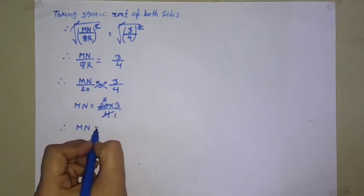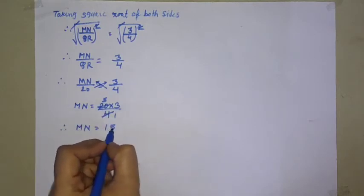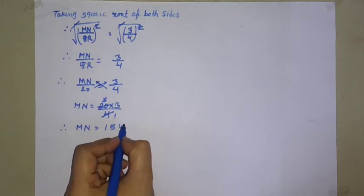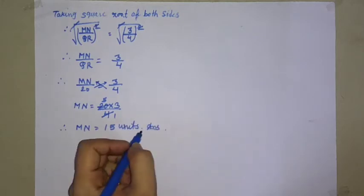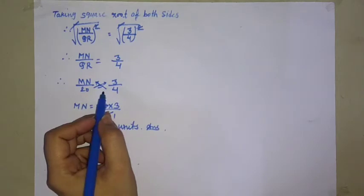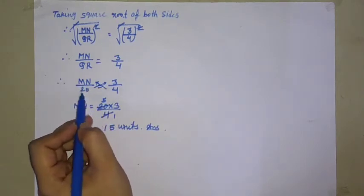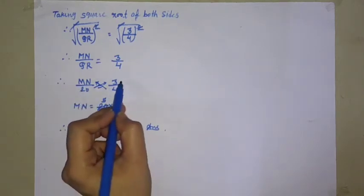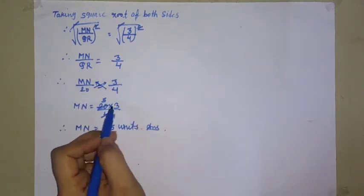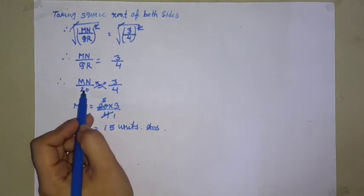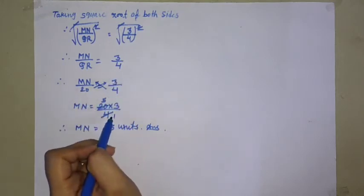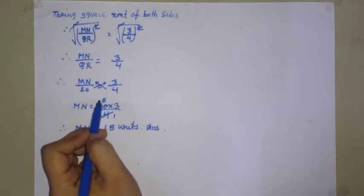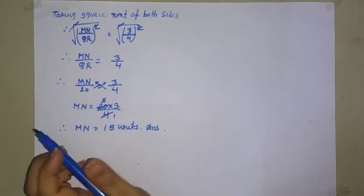MN equals 5 times 3 equals 15 units. Answer: MN equals 15 units. We can directly multiply 20 by 3 and divide by 4 to get 15.